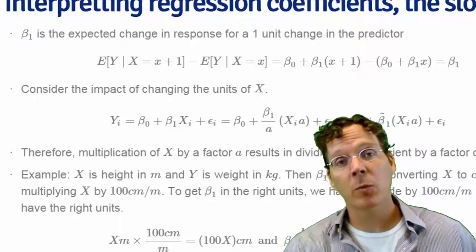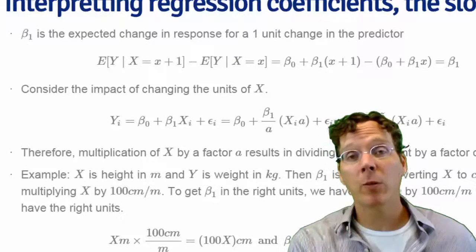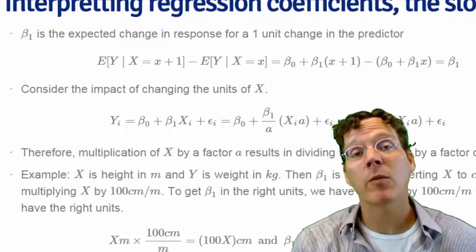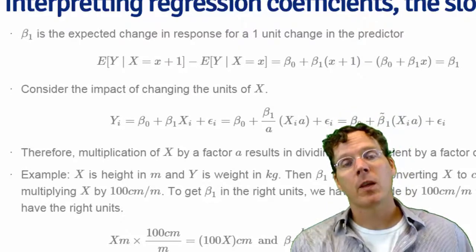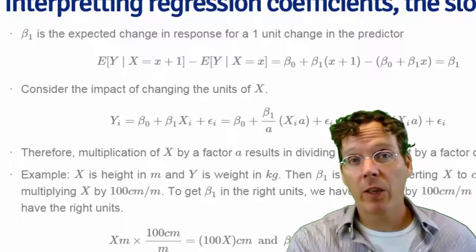So beta one is the expected change in the response per unit change in the regression variable. And so it has a nice interpretation. It's not that different from the regular interpretation of a line, just now with the expected value, the conditional expected value of the response. Now remember, if we shift the X variable, it doesn't change the slope. We discussed that on the previous slide.